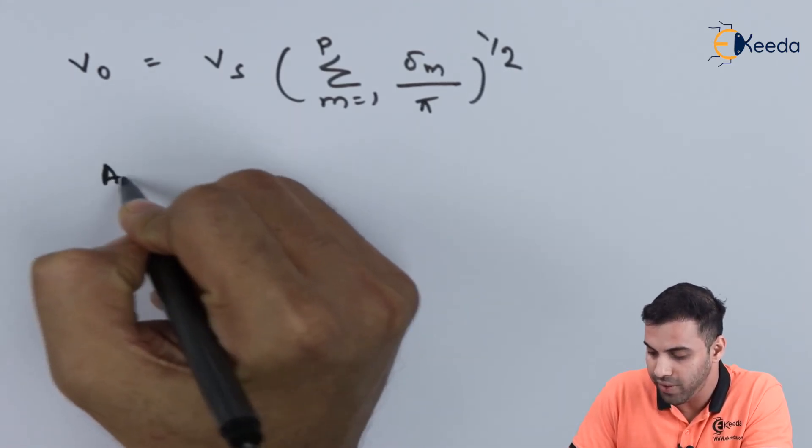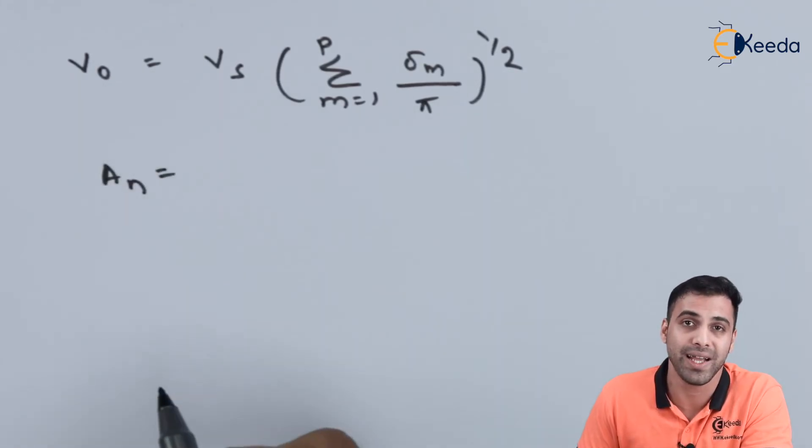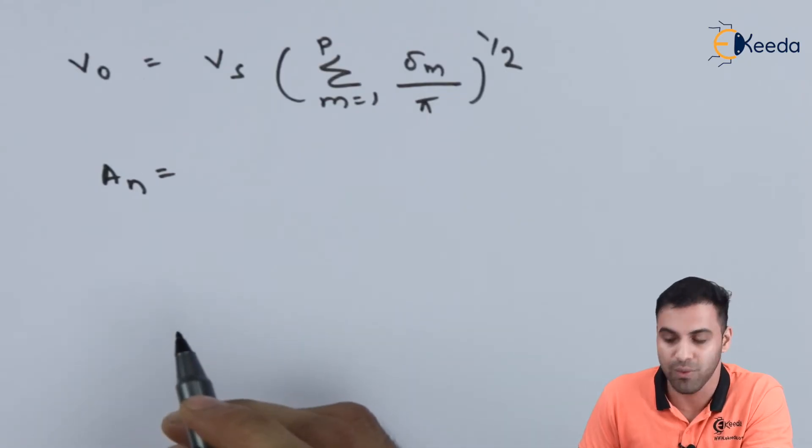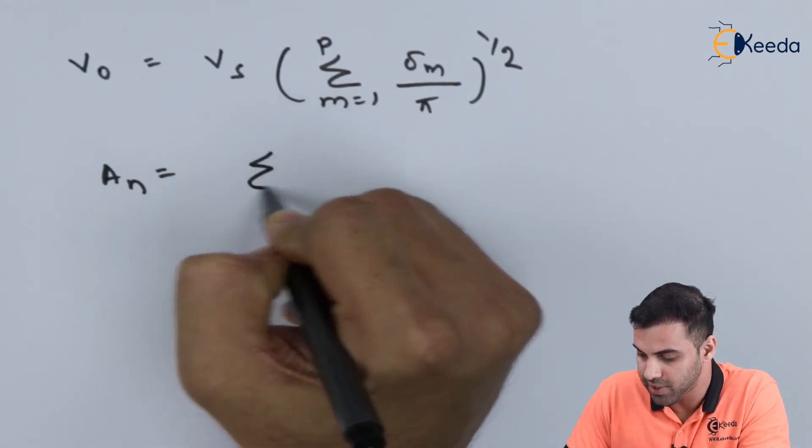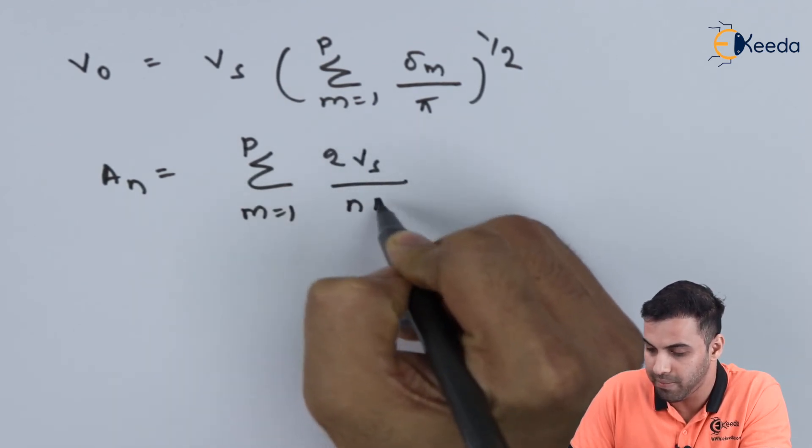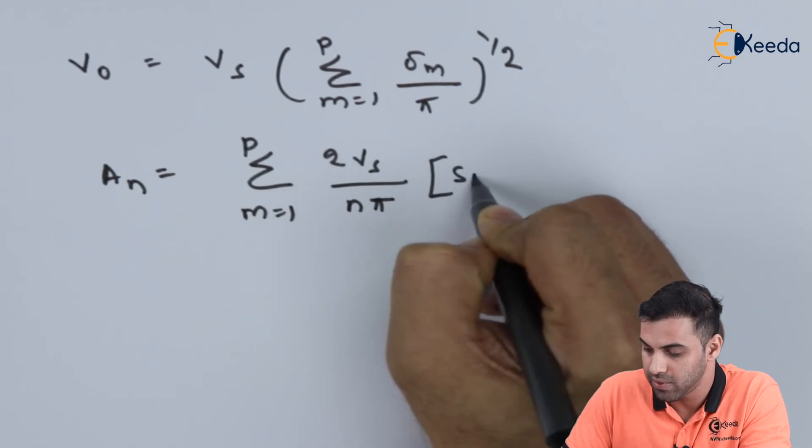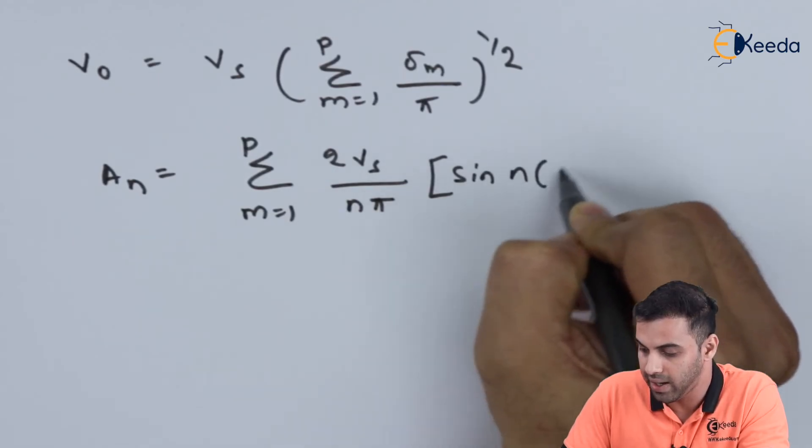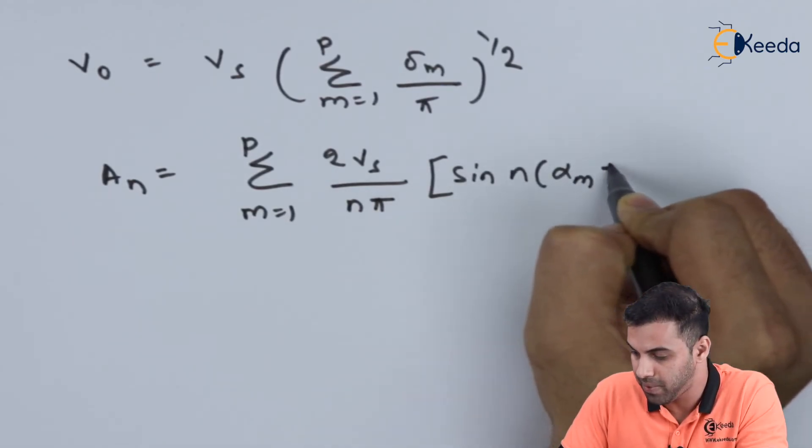Now the value of a_n which is required to determine the instantaneous value of the output voltage is equal to summation m equals 1 to p 2VS divided by n pi sine n lambda_m plus del_m minus sine n lambda_m.